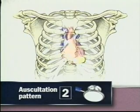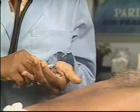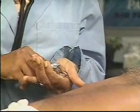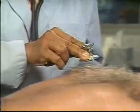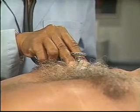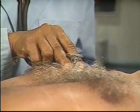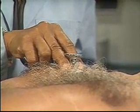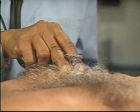The first auscultation sequence is shown in this video. Now I'm going to listen to your heart in the various areas of your chest. Adjust your stethoscope so that you'll be listening through the diaphragm. When pressed firmly on the chest, the diaphragm is best for hearing relatively high-pitched sounds such as S1, S2, the murmurs of aortic and mitral regurgitation, and pericardial friction rubs.